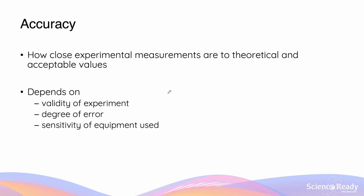Let's talk about accuracy. Accuracy by definition refers to how close your experimental measurements or data are compared to the theoretical and accepted values. This definition is very important to keep in mind because it will help you understand the difference between accuracy and validity as well as reliability.